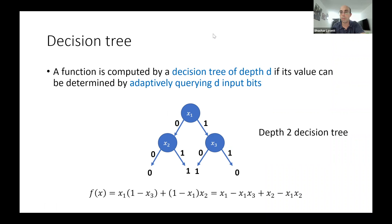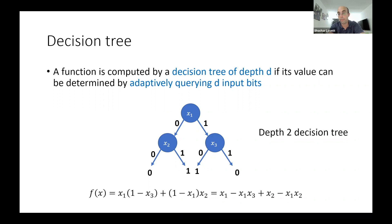Here's another very natural source of such examples that look very different from the AND function: decision trees. Decision trees are a very well-studied model in computer science with many applications. As a boolean function, consider a tree of depth two where the root queries variable x1. If the value is zero, go left and query x2; if one, go right and query x3. Based on those values you get the answer. When you expand this as a polynomial, this specific example is relatively sparse with only four monomials — and this is not by accident.